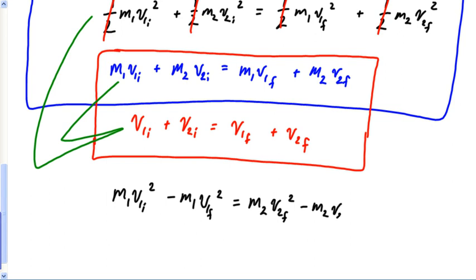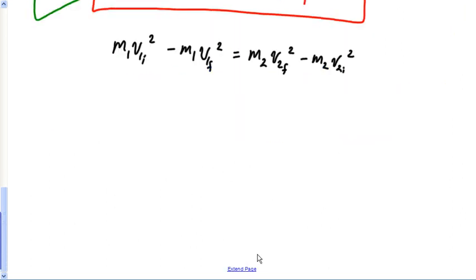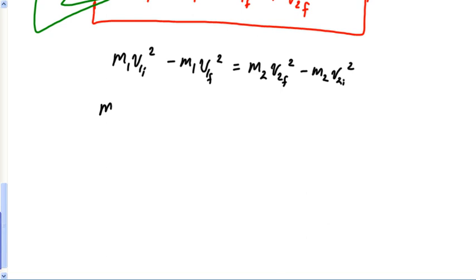I'm going to take this formula and I'm going to get the M1s on one side so I can factor it out. In other words, I'm going to rearrange this equation so that everything with an M1 is on one side of my equal sign and everything with an M2 is on the other side. So that's what I'm going to do first. So I'm going to take this equation M1 V1 initial square and then I'm going to come over here and bring this other M1 over.